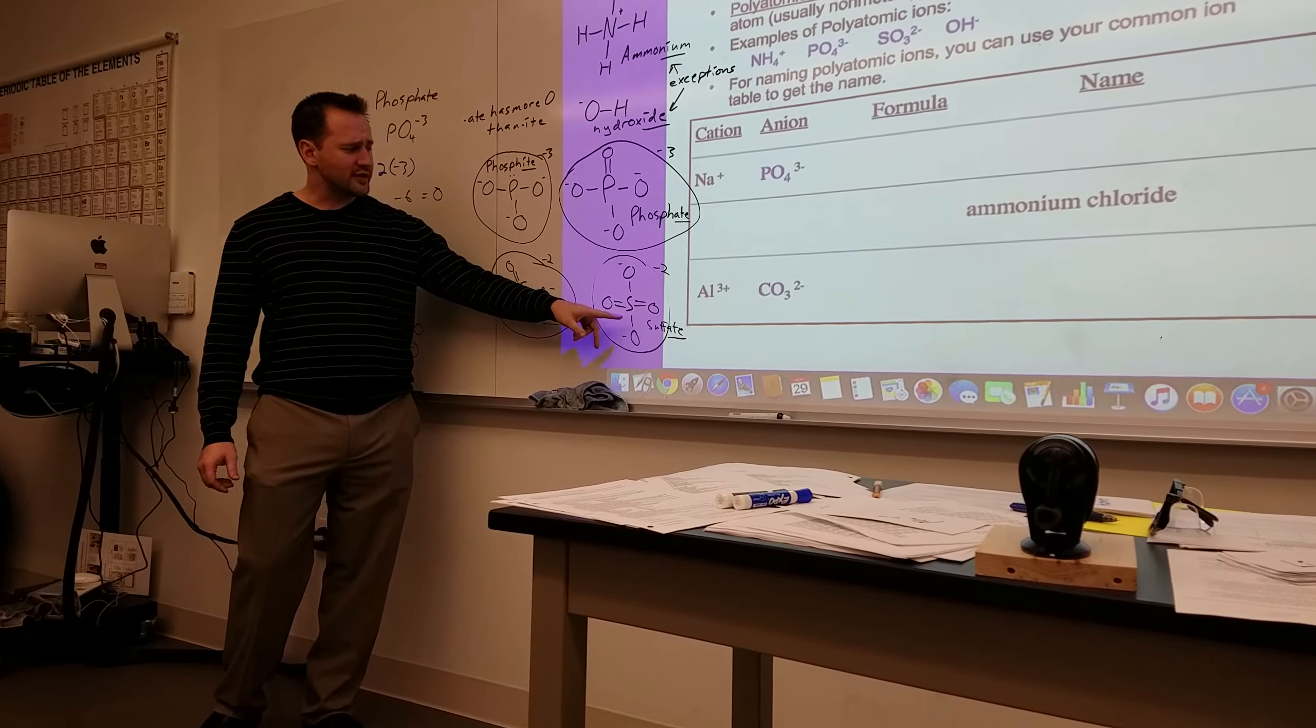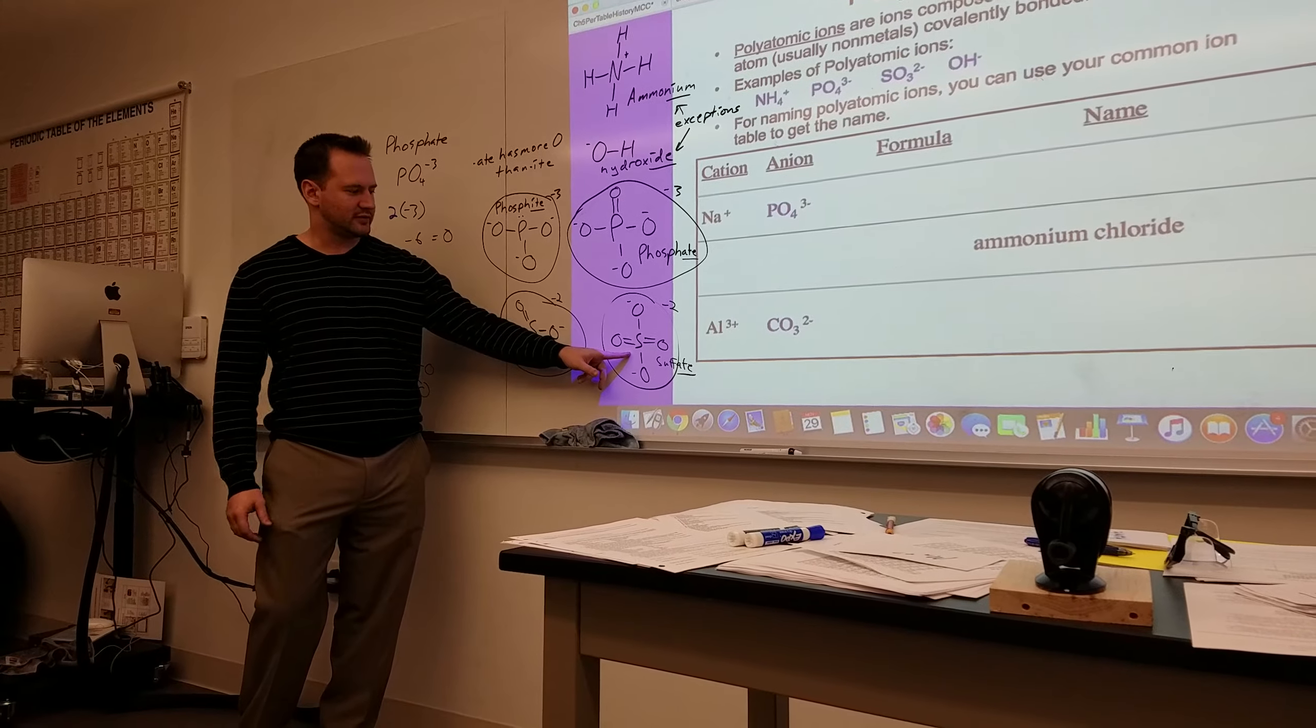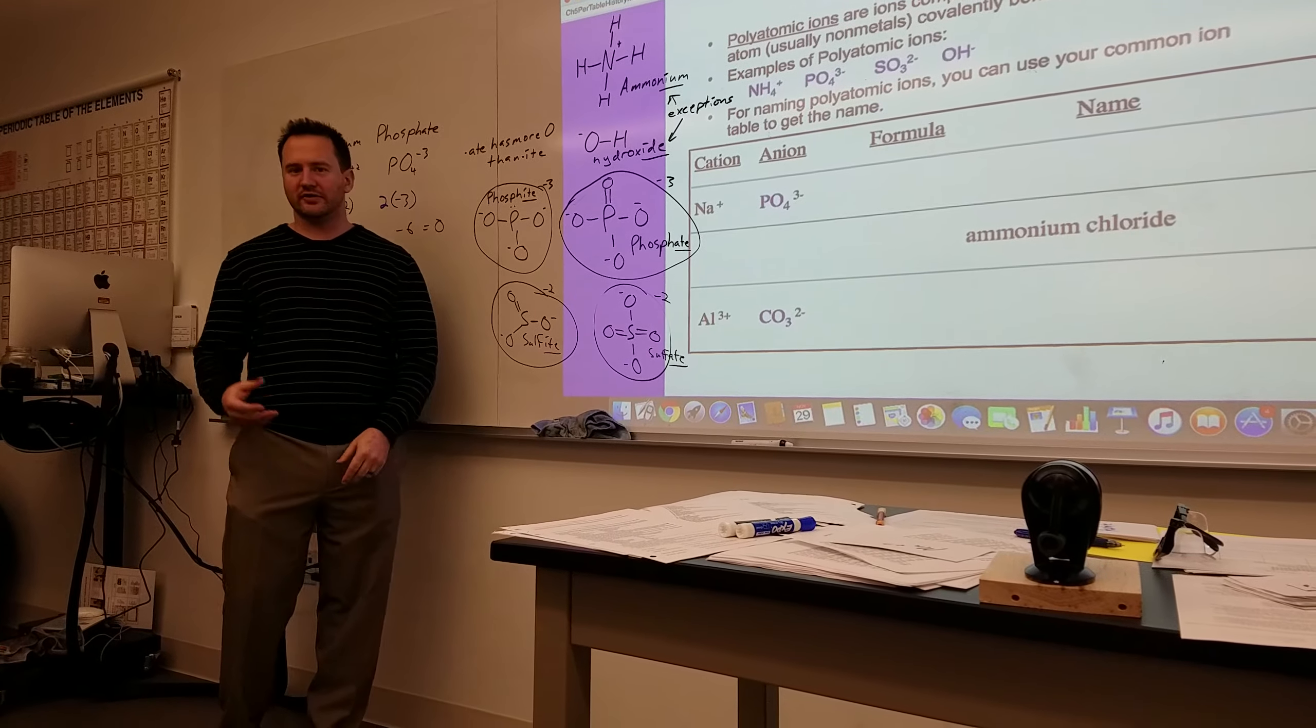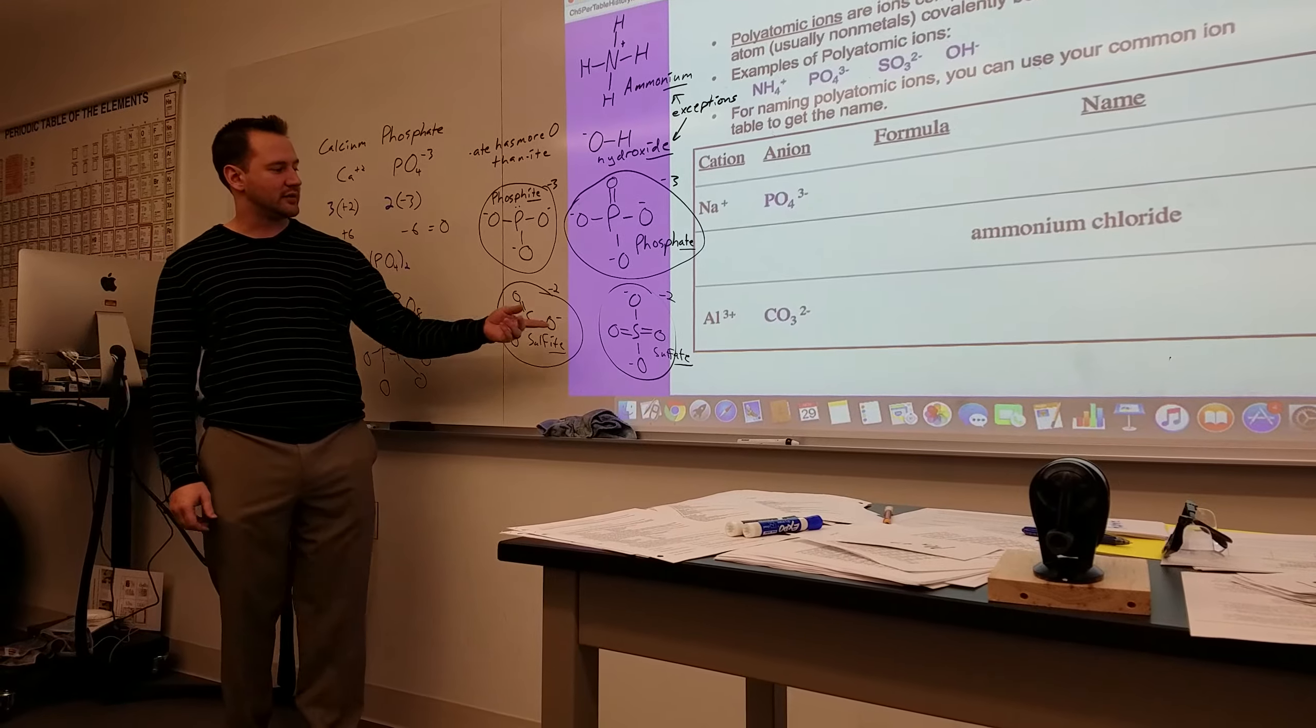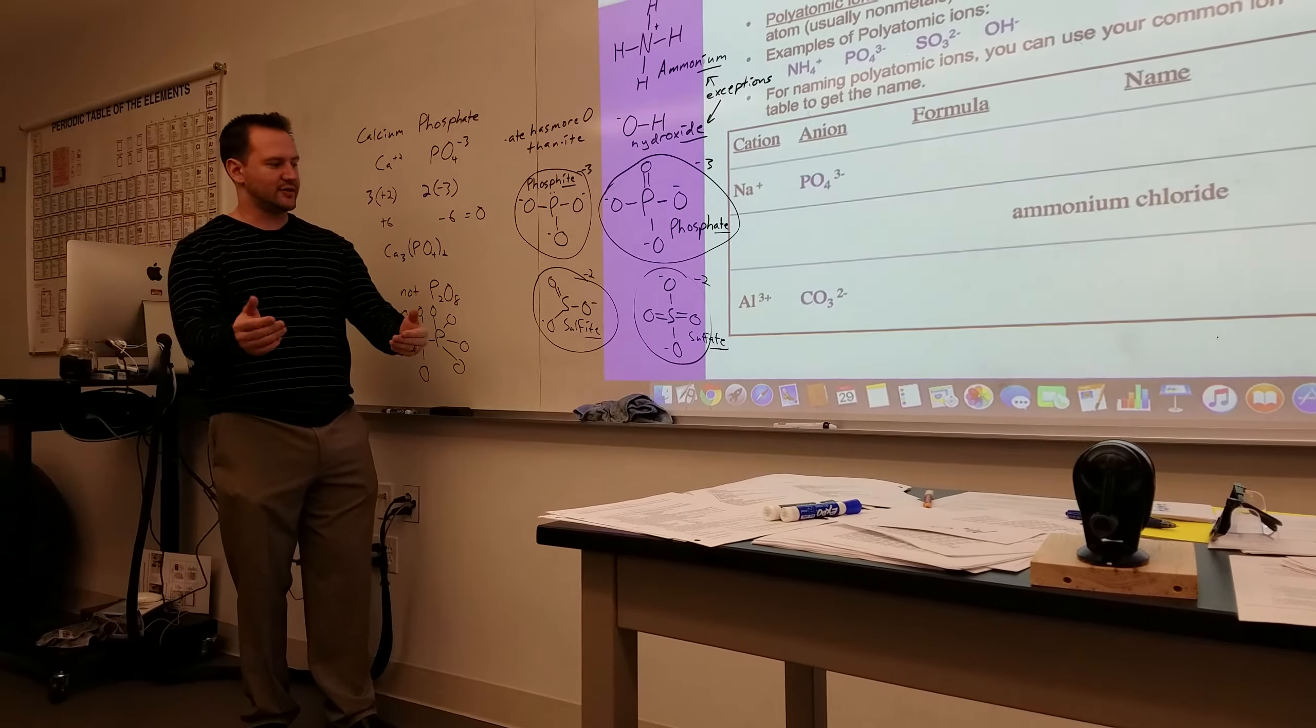Sulfate is another very common example in sulfuric acid. It's battery acid. It consists of a sulfur bonded to four oxygen atoms, and two of the oxygens have a negative one charge. So that's sulfate.